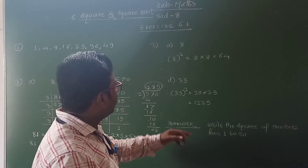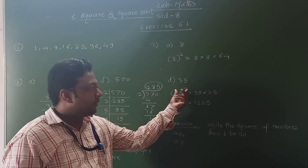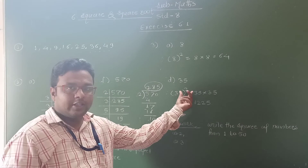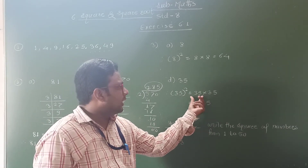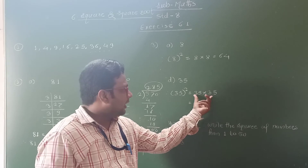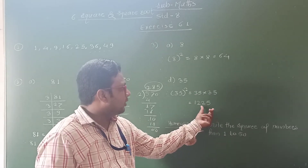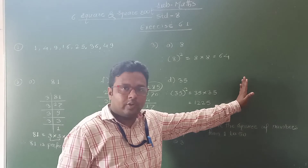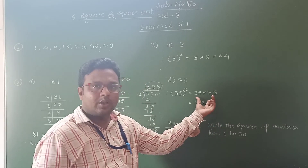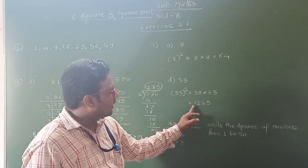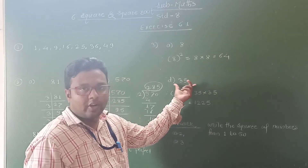Next, I take the example 35. Find out the square of 35. We write 35² = 35 × 35. We multiply 35 two times. And their multiplication result is 1225. You can do the rough work and find out the correct product. Here we get 1225 as the square of 35.